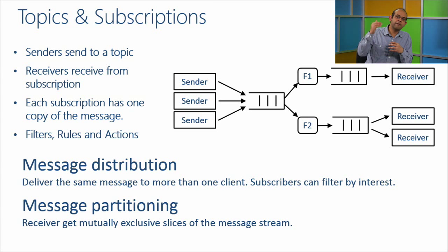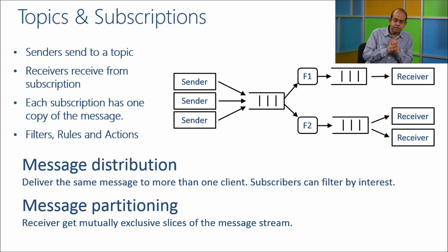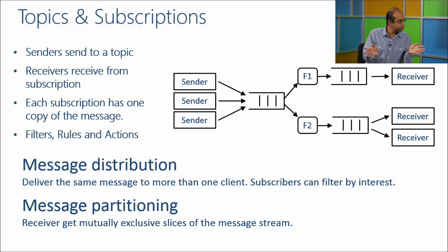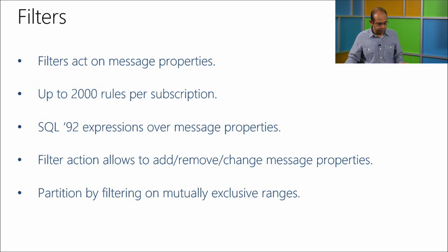Let's look at topics in more detail. Message distribution is really the differentiator: with a queue, you can never have one message go in and more than one come out. With a topic, one message goes in and as many messages come out as there are subscriptions. To achieve different topologies, you use filters and rules — mutually exclusive filters split the stream, while a true filter duplicates the stream.